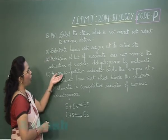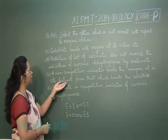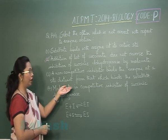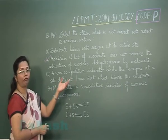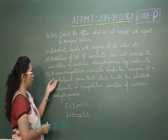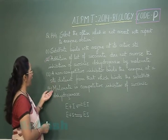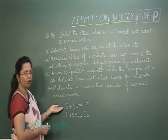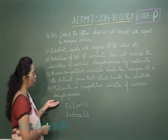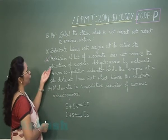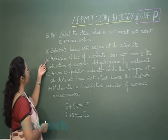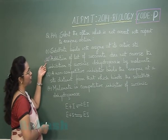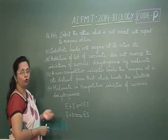The non-competitive inhibitor binds to the enzyme at a distinct site which is different from where the substrate would bind — that is correct. And malonate is the competitive inhibitor, as we just stated, so that is also a true statement. The only false statement is option number two, and that would be our answer.